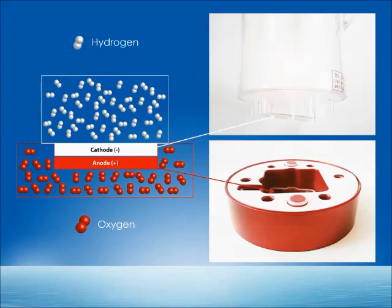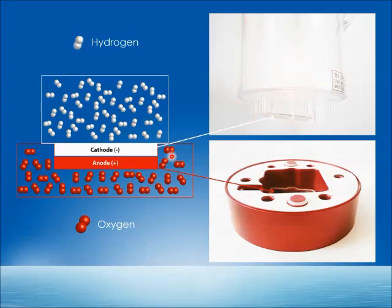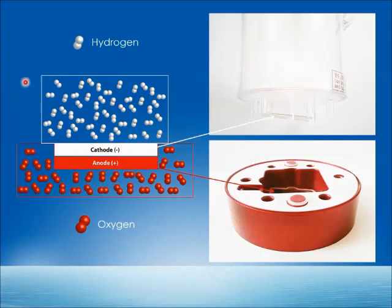Our hydrogen water machine has a special membrane that separates the cathode side and the anode side. The anode takes electrons and gives them to the cathode side, which produces hydrogen in the water inside the beaker. The membrane separates the two electrode sides so that inside the beaker only hydrogen is produced, and inside the bottom only oxygen is produced. This is why hydrogen can be saturated at high levels for a long time — only hydrogen is present in the beaker.